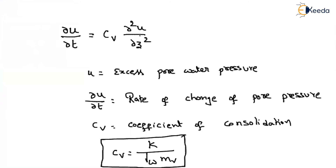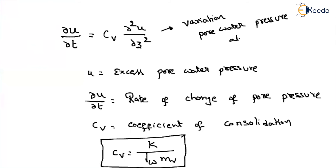The term ∂²u/∂z² represents the variation of pore water pressure along the length of the soil sample, where Z represents the length. On the left side we represent the rate of change of consolidation with time; on the right side we represent how pore water pressure changes along the height of the soil sample.